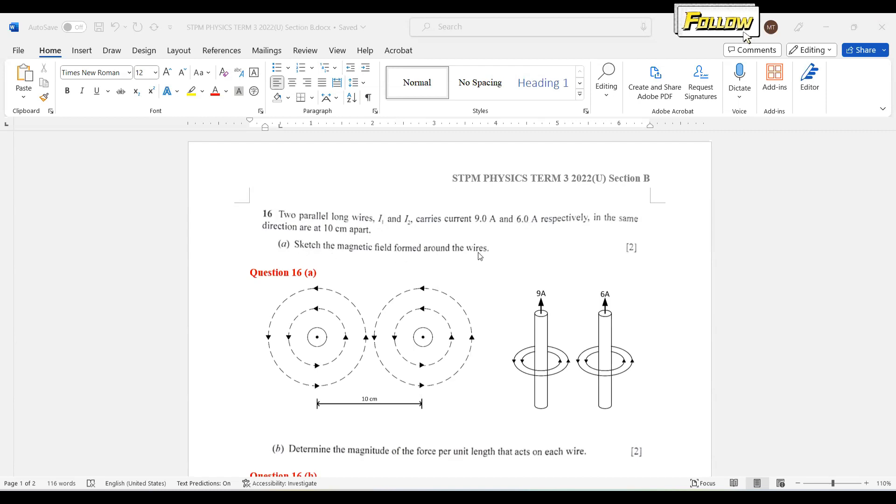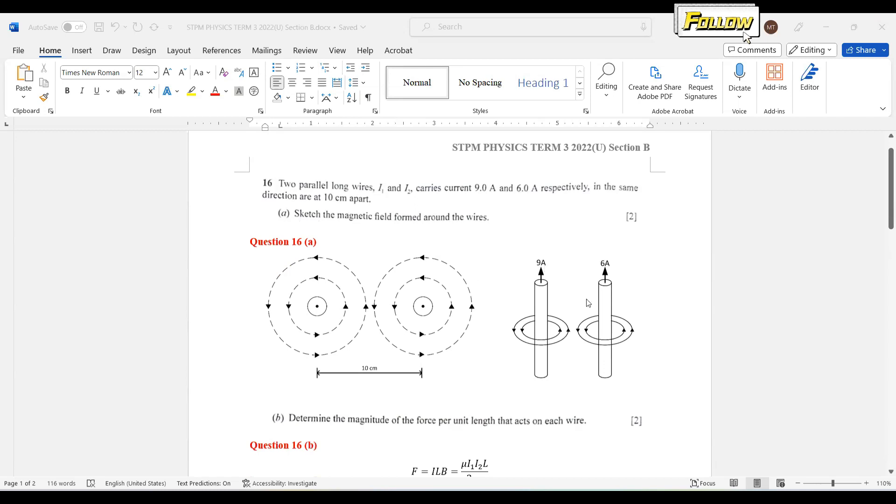Sketch the magnetic field form around the wires. I think you can do it either in 2D or 3D form. This should be the diagram. You can apply the right hand rule to obtain the direction of the magnetic field. It can be either into the paper or out of the paper, depending on you.